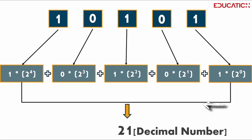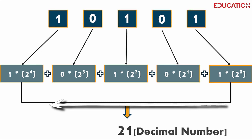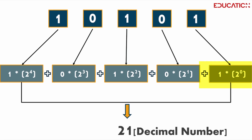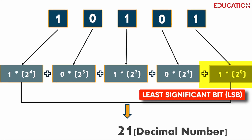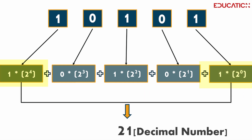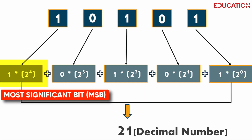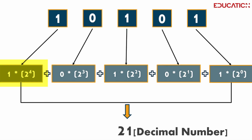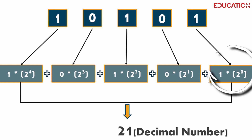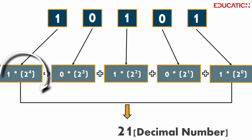Binary code can be read from right to left. The rightmost digit is the least significant bit, or LSB, and the leftmost digit is the most significant bit, or MSB. The LSB represents the smallest power of 2, and the MSB represents the largest power of 2.